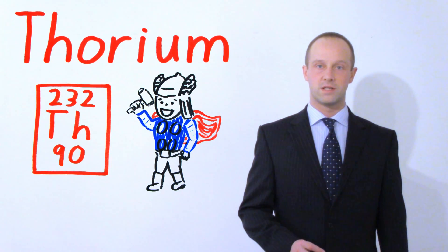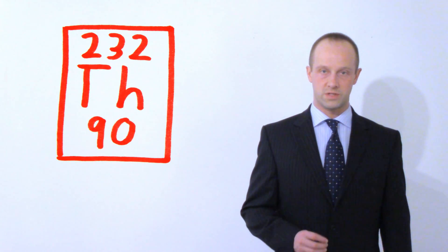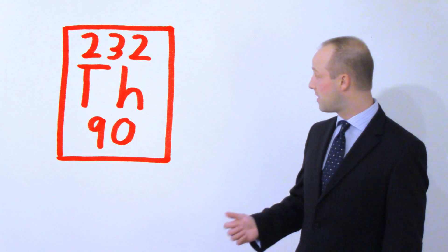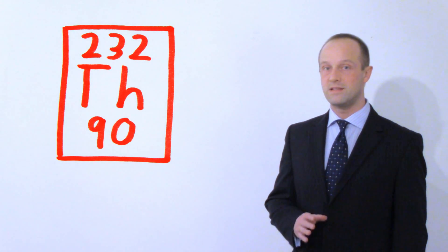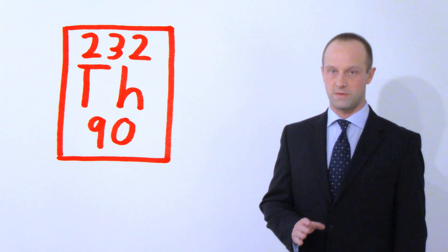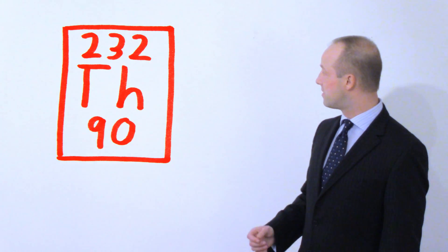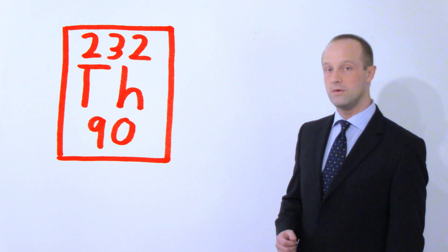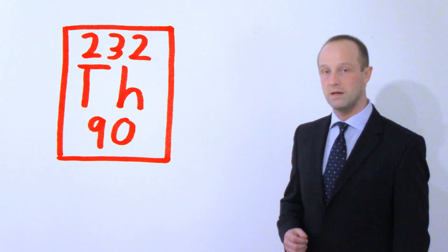We're going to start with thorium-232. So here is thorium's entry in the periodic table. This is the most common isotope of thorium. So you can see that we've got a mass number of 232 and we've got a proton number of 90.